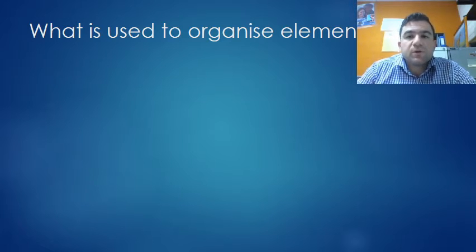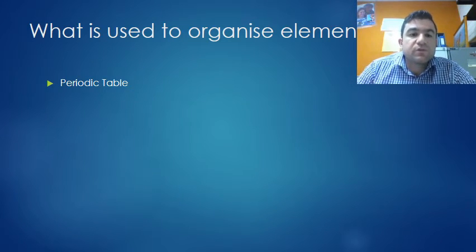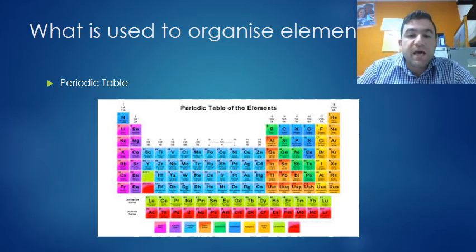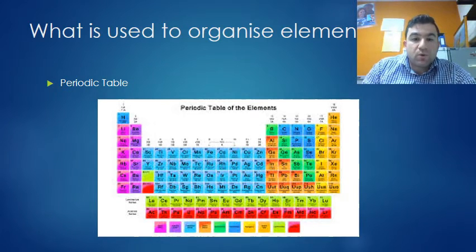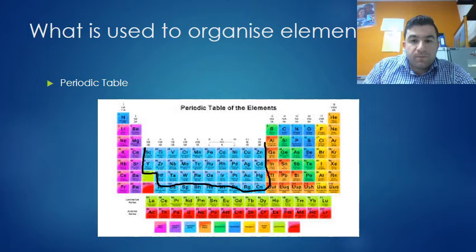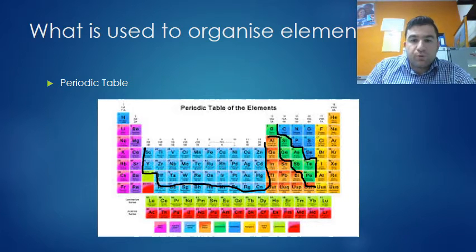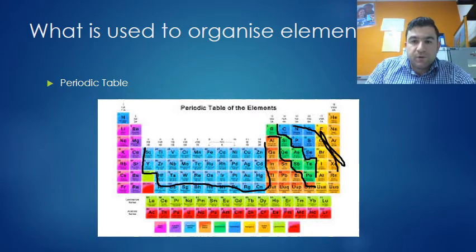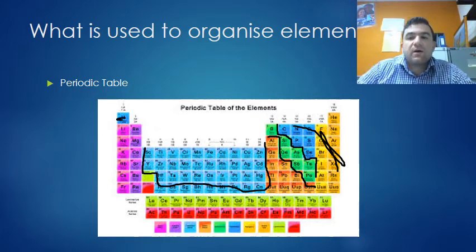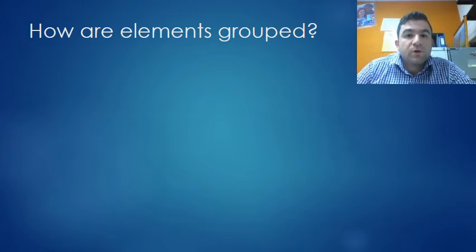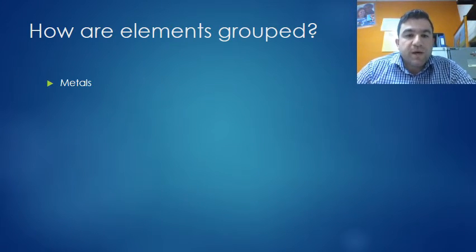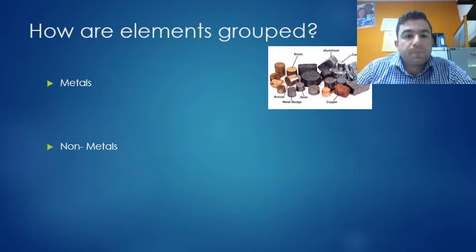What do we use to organize the elements? It's called the periodic table. The periodic table is divided into groups. The metals are in the blue and red sections here. The green are our metalloids, and the blue - everything else on this side - are our non-metals. So how are elements grouped? Metals and non-metals.